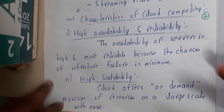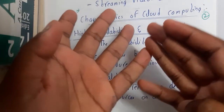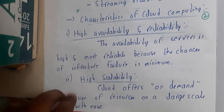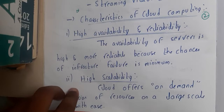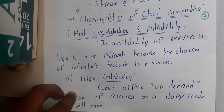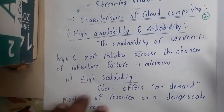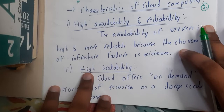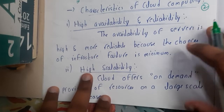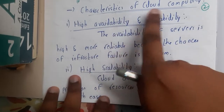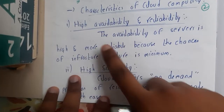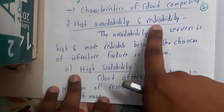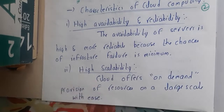Basically, whenever there is a question like 'explain about cloud computing in detail,' you can write the definition and follow up with these things, because we want some lengthy answers. By writing these things you can elaborate your answers and increase your understanding. So the first characteristic is high availability and reliability.